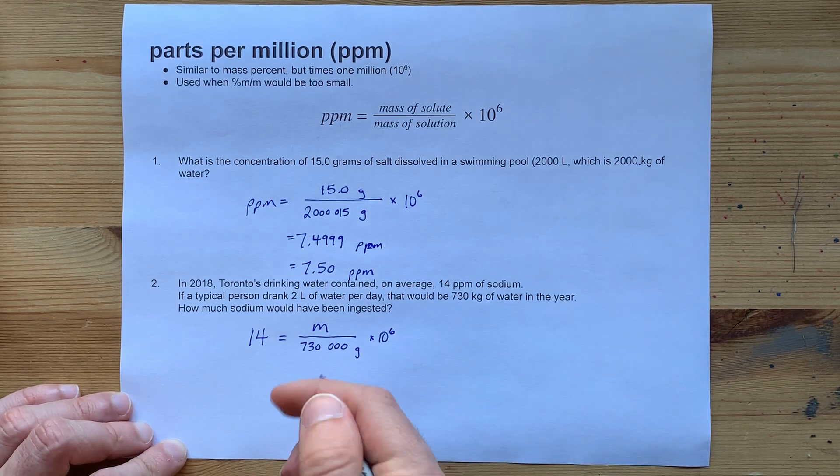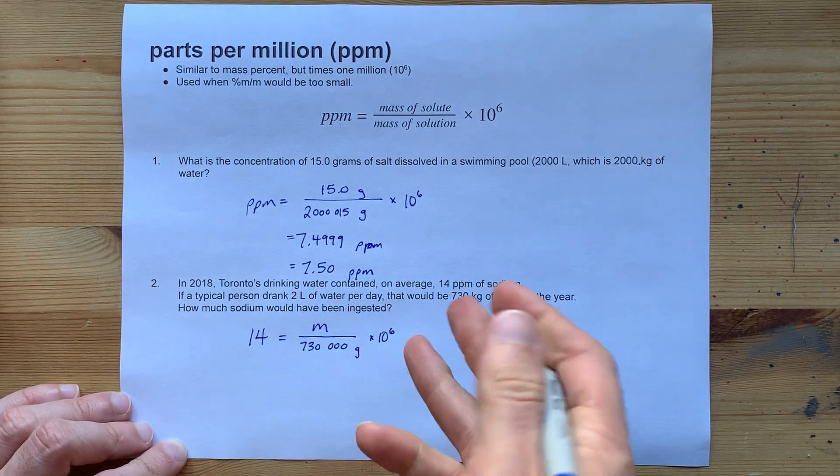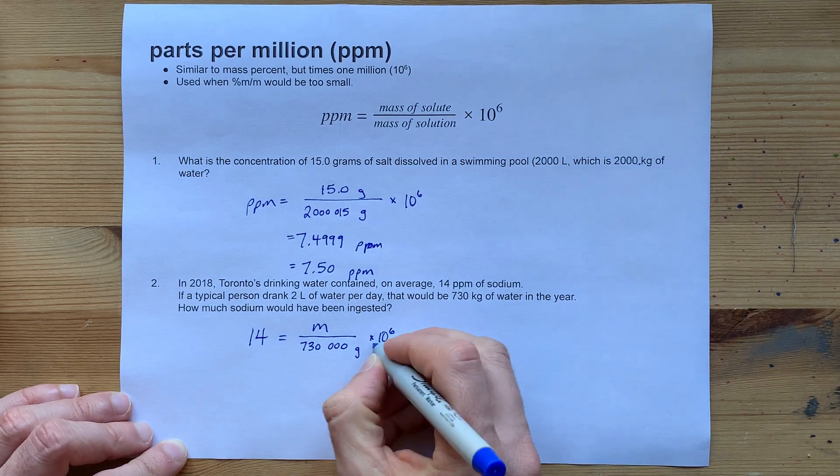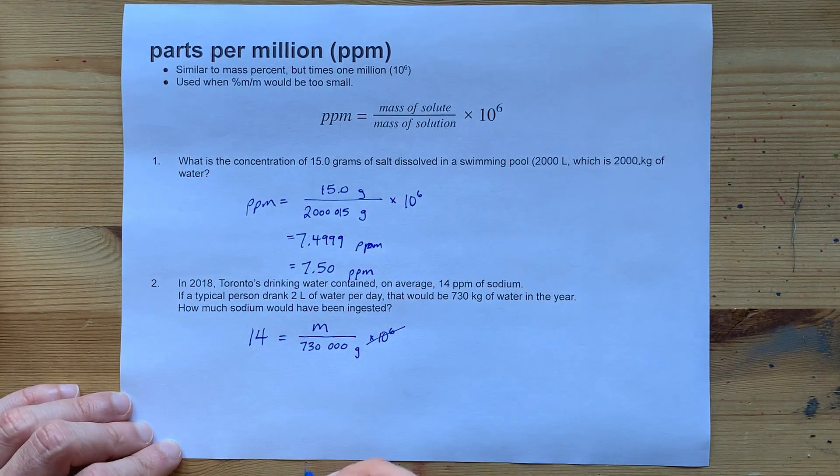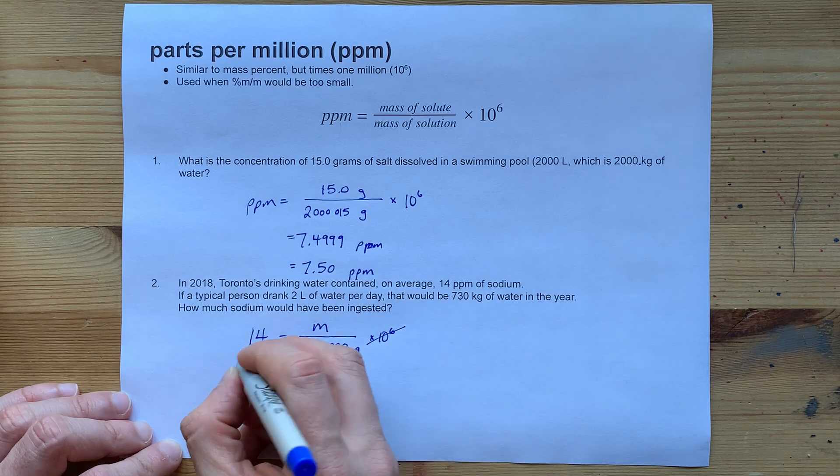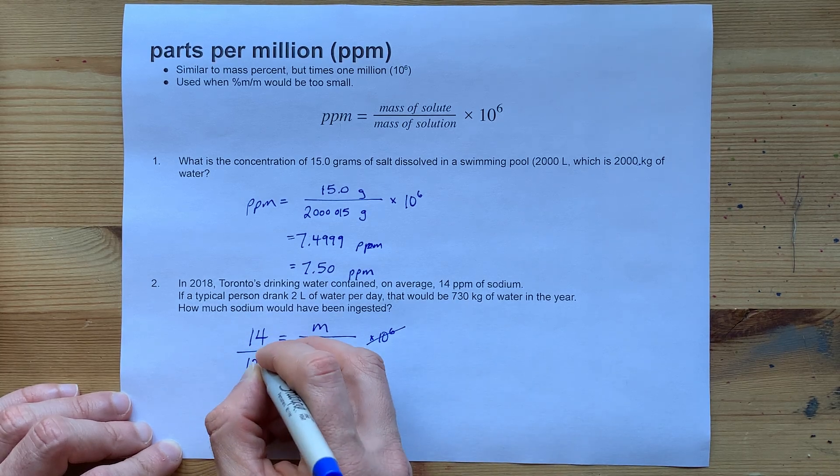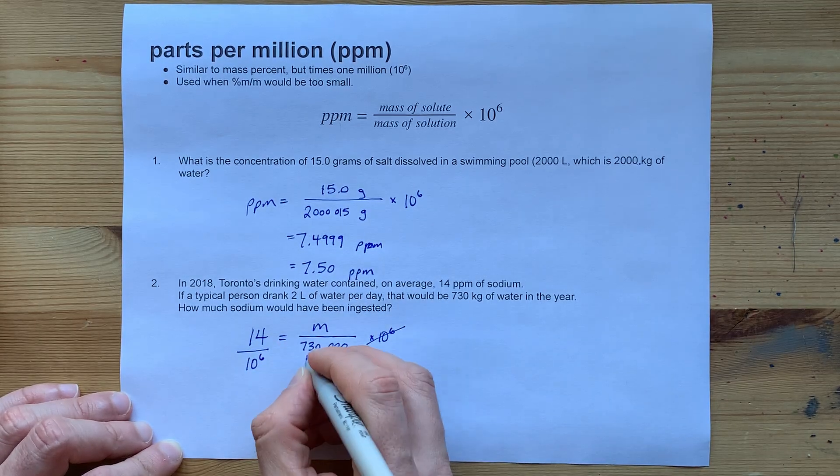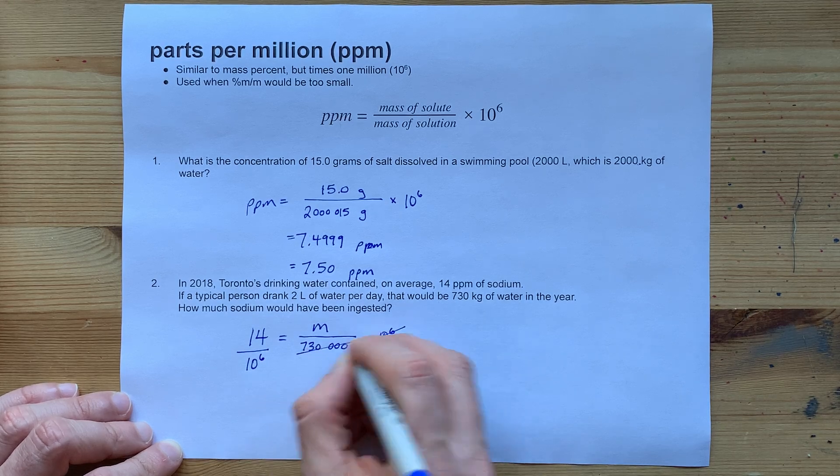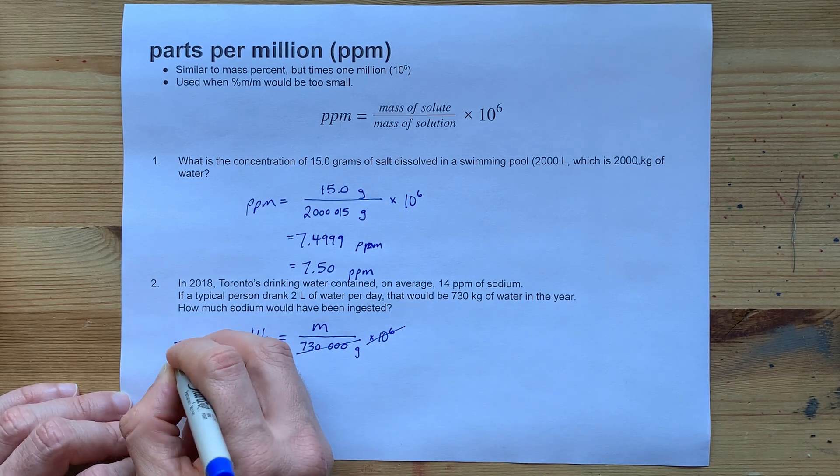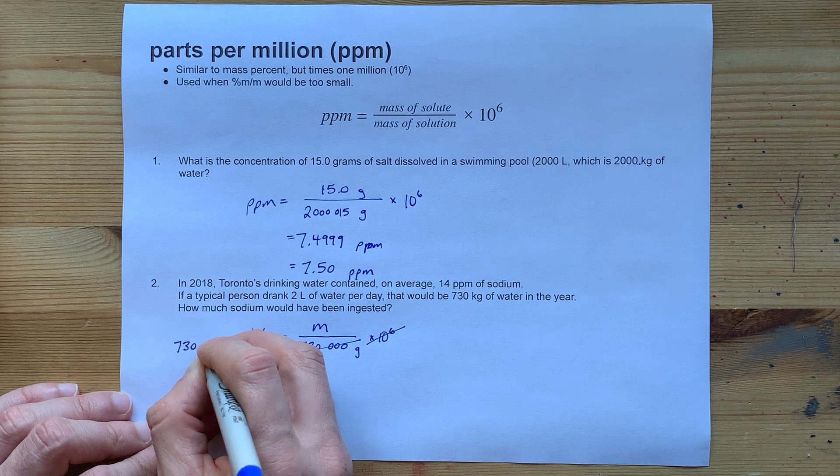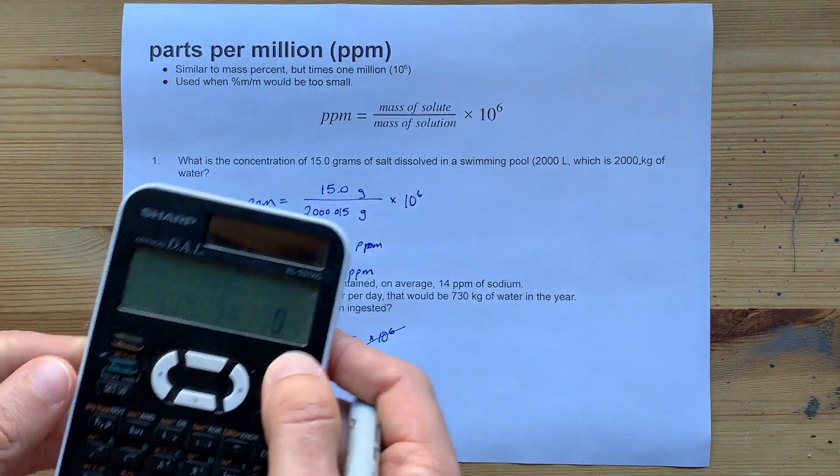Now, to solve for m here, you have to undo the things that are being done to m. In order to undo that times 10 to the power of 6, you have to divide by 10 to the power of 6 on the other side. And in order to undo this division, you have to multiply on the other side. That's 730,000. Let's do that on our calculator.